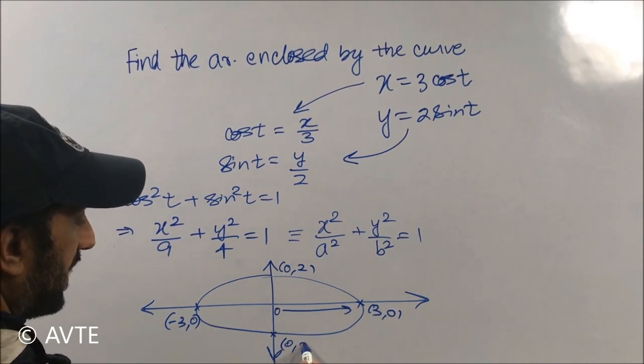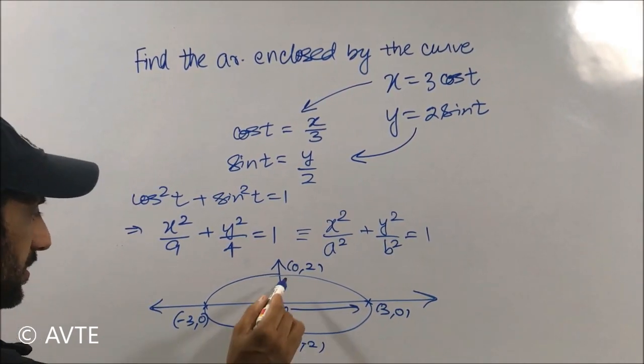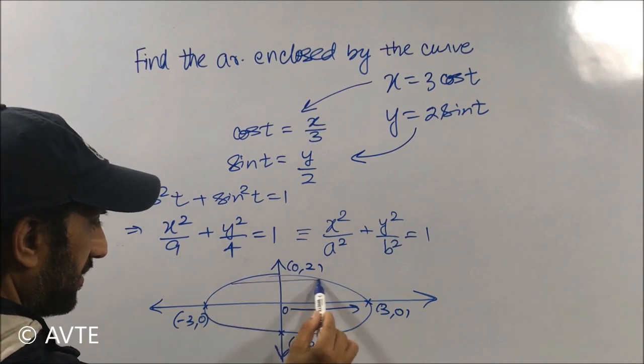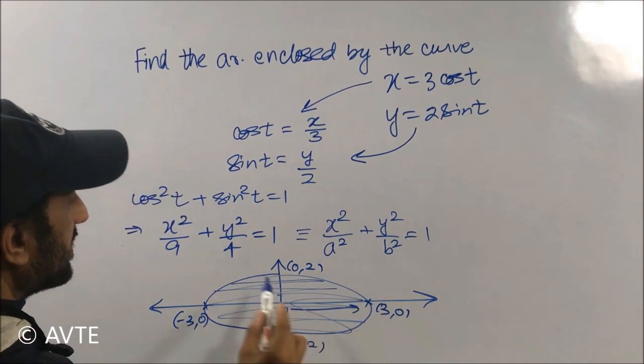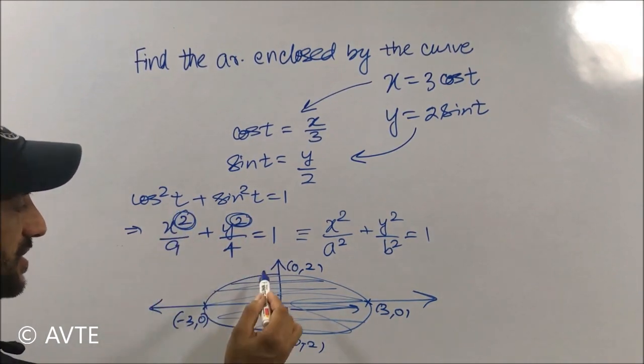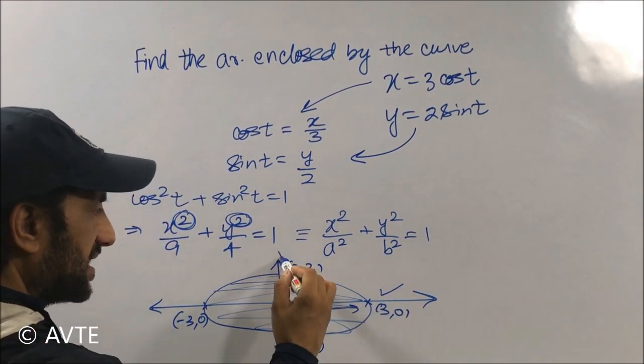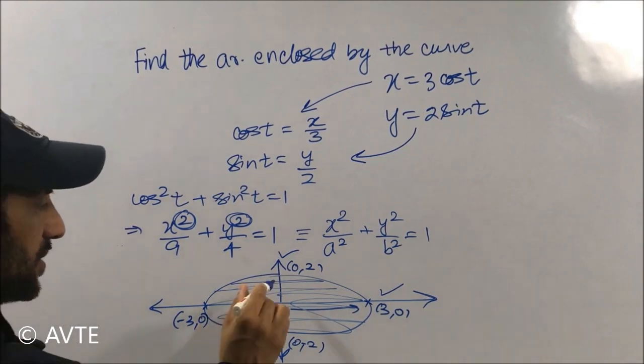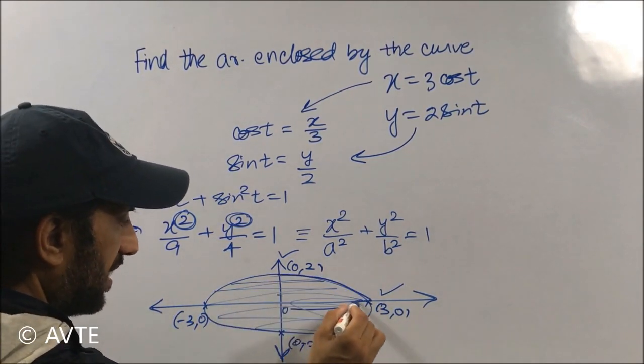And now the target is to find the area enclosed by the curve. So since the curve is containing even powers on X and Y, so it is symmetric to X axis as well as to the Y axis.